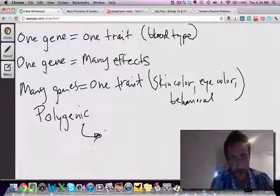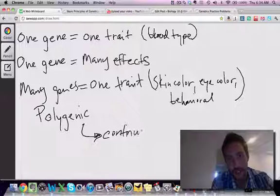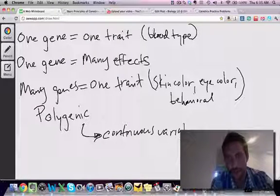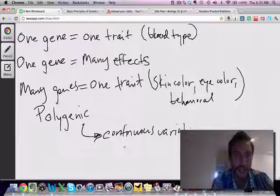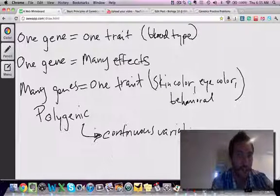These show what we call continuous variation. If you look at human skin color, you can't put it in two or three neat phenotypic categories. You have basically a huge range, and that's owing to the fact that all of these different genes are combining together.